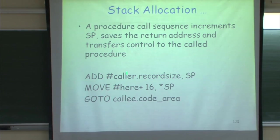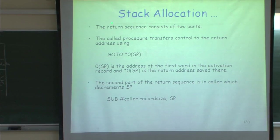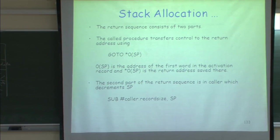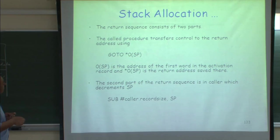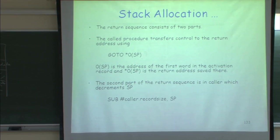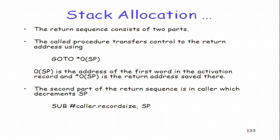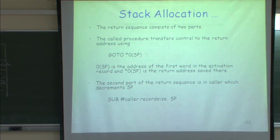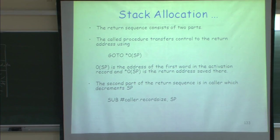The call sequence is now complete. The return sequence simply says: go to whatever is at offset 0 from the stack pointer, which is where the return address was stored. Then subtract from the stack pointer whatever is the size of the activation.